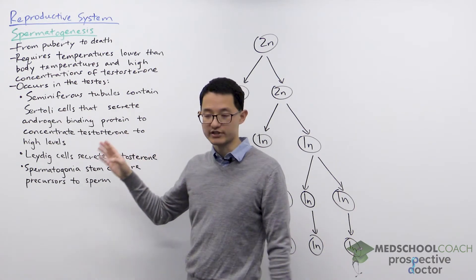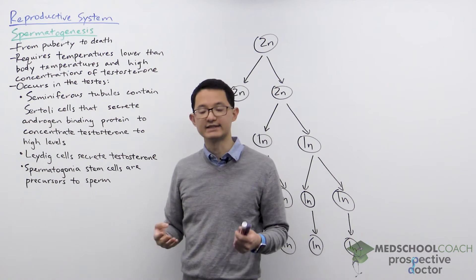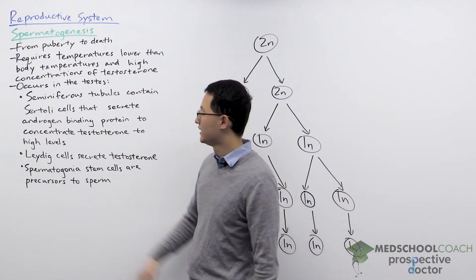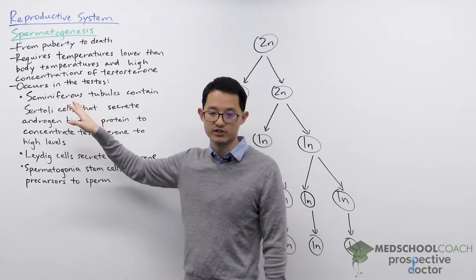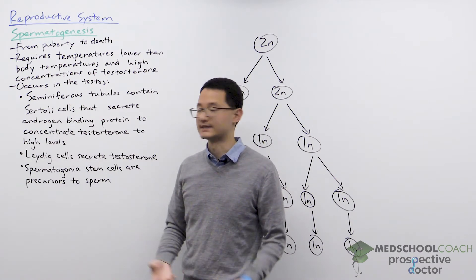Now spermatogenesis occurs in the testes. The testes contain several types of cells. First of all, there are the seminiferous tubules which make up the majority of the testes.